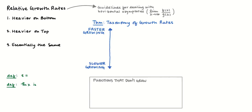Now I'm back to the infinity, negative infinity topic — talking about relative growth rates of different types of functions. You may have seen this in pre-calculus or algebra 2, but that was usually with polynomial on top and polynomial on bottom. Now we're going to be putting different types of functions and comparing them. I'm going to start with the taxonomy of growth rates, covering three main categories of functions needed for AP Calculus.